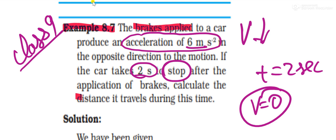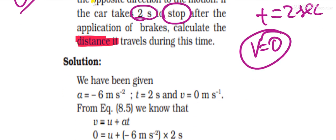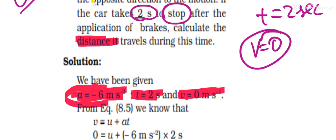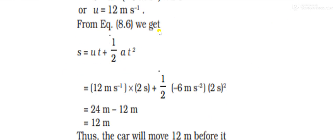It is a very simple question. The acceleration is retardation, which is given in the question. Time is given. Final velocity is 0 because it finally becomes stopped. Now we have to find the displacement covered by this object.